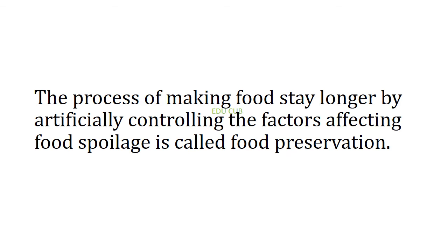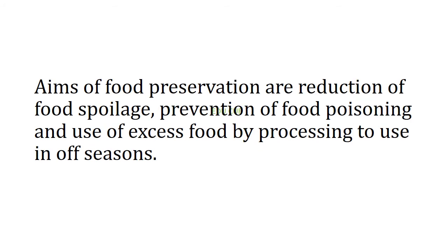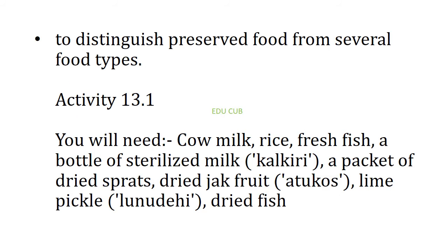The process of making food stay longer by artificially controlling the factors affecting food spoilage is called food preservation. Some attempts are made to preserve the nutritional value and other characteristics of food during preservation. The aims of food preservation are: reduction of food spoilage, prevention of food poisoning, and use of excess food by processing to make use of it across seasons.